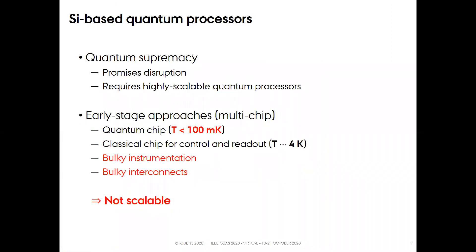Quantum supremacy promises disruption in many fields of science and technology, but it requires highly scalable quantum processors. The early stage approaches rely on two separate chips: a quantum chip hosting the qubits and kept at a temperature typically lower than 100 mK, and a classical chip hosting the controller readout circuits. This latter chip must be kept at a higher temperature in the order of 4 K due to power consumption constraints. This multi-chip approach requires bulk instrumentation and interconnects, and is not scalable.